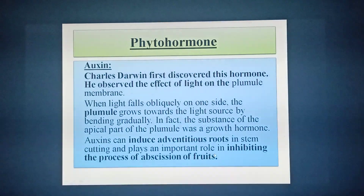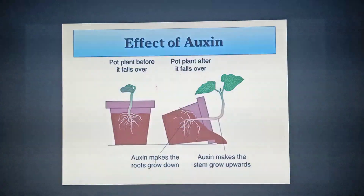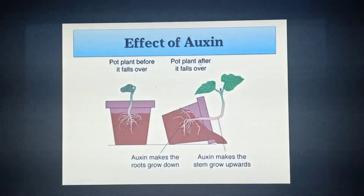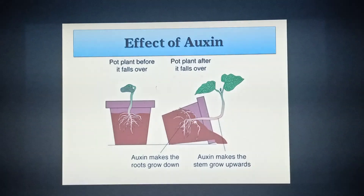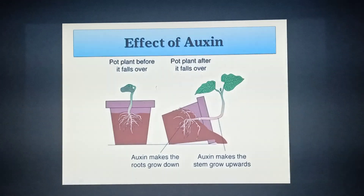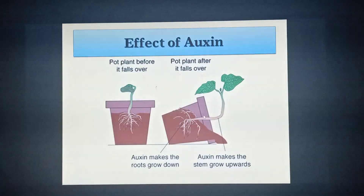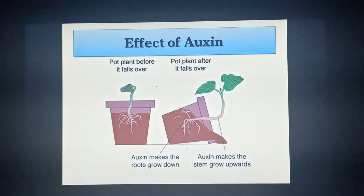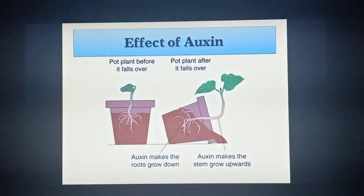Auxin plays an important role in inhibiting the process of abscission of fruits. Looking at the picture, due to the effect of auxin, the plumule grows towards the sunlight by bending gradually, and the root grows towards the soil. This is the effect of auxin on the body parts of the plant.